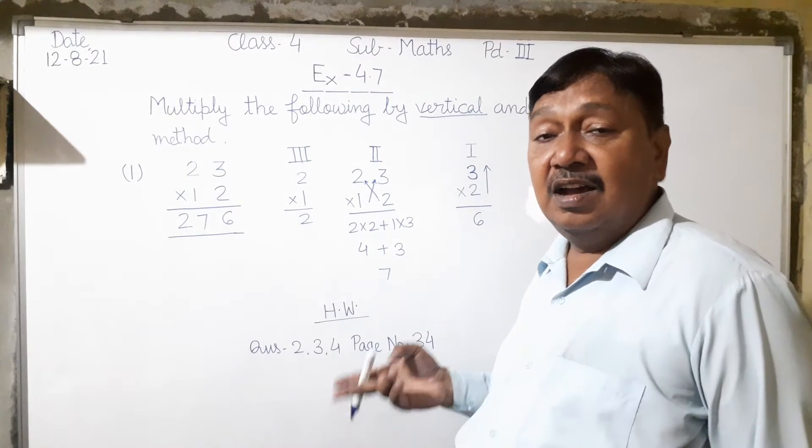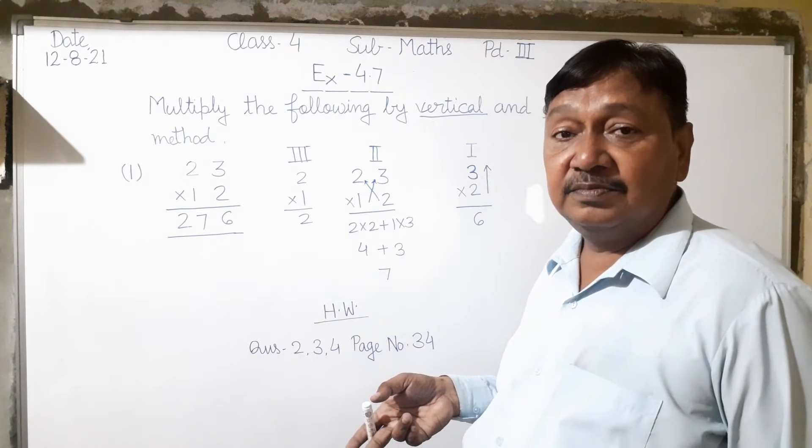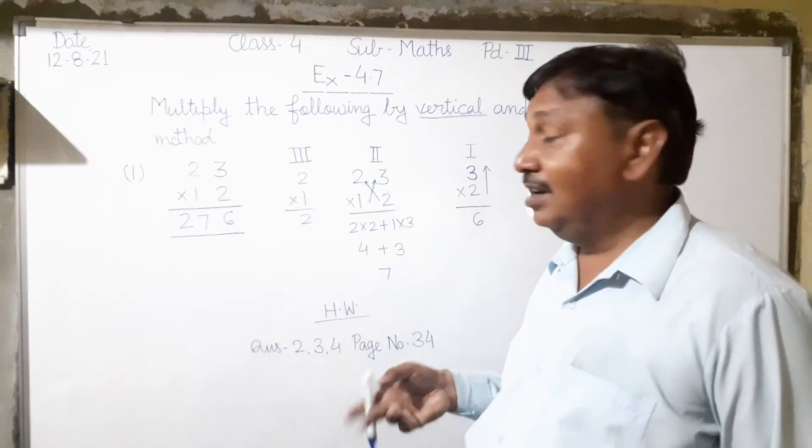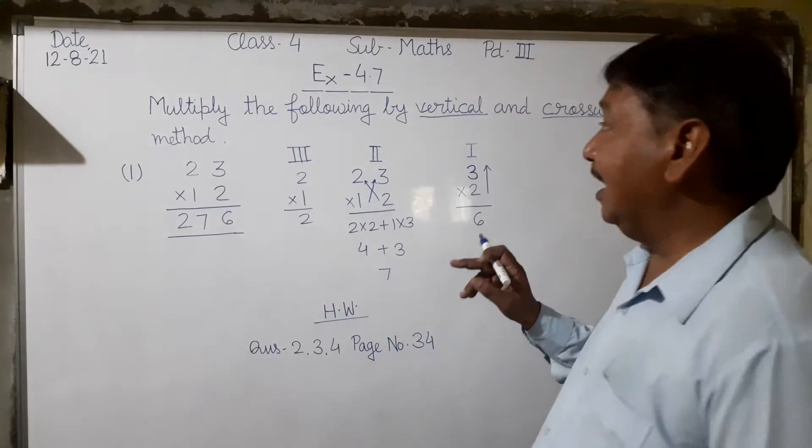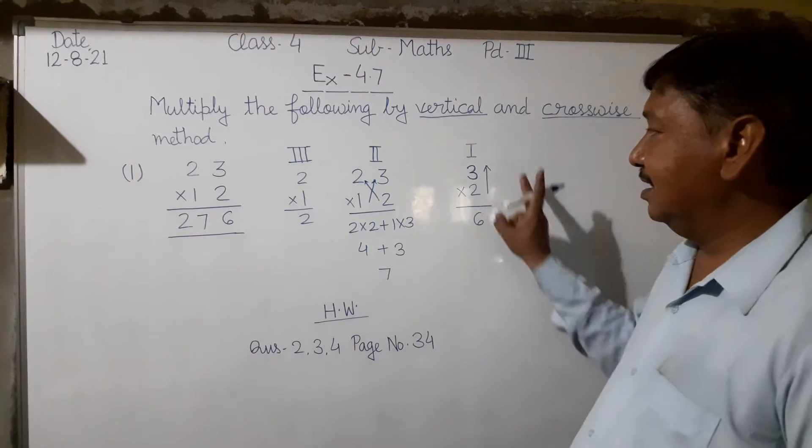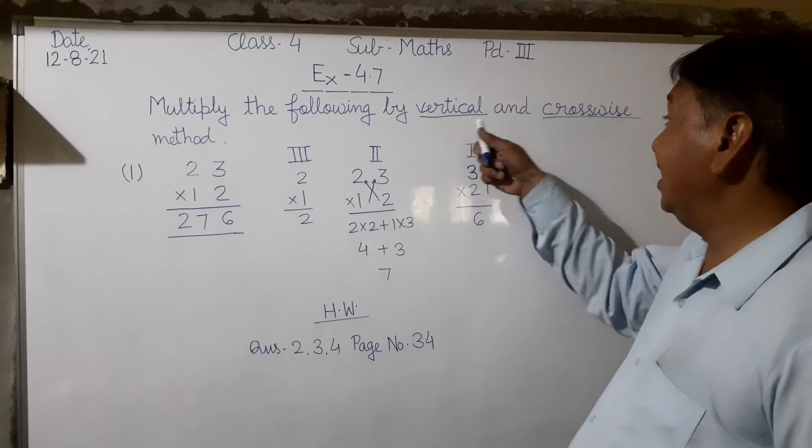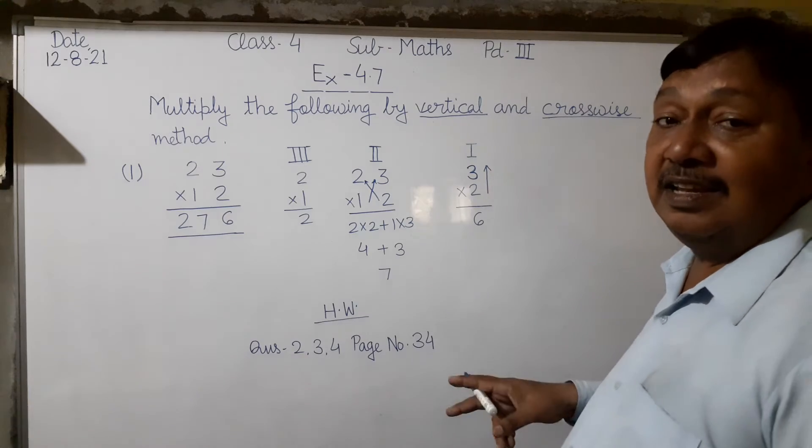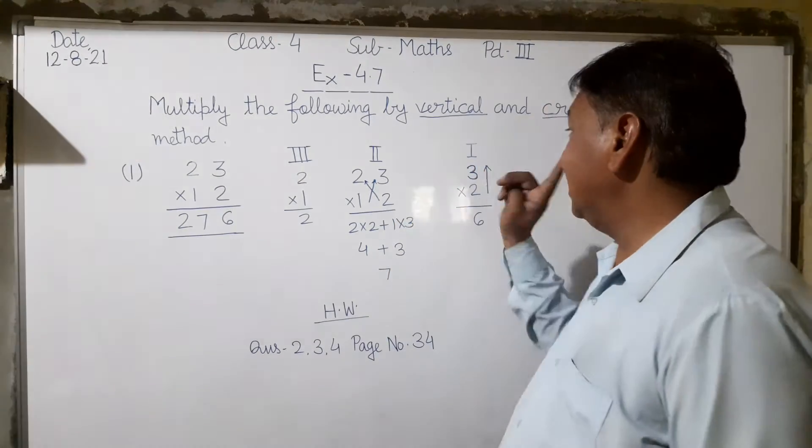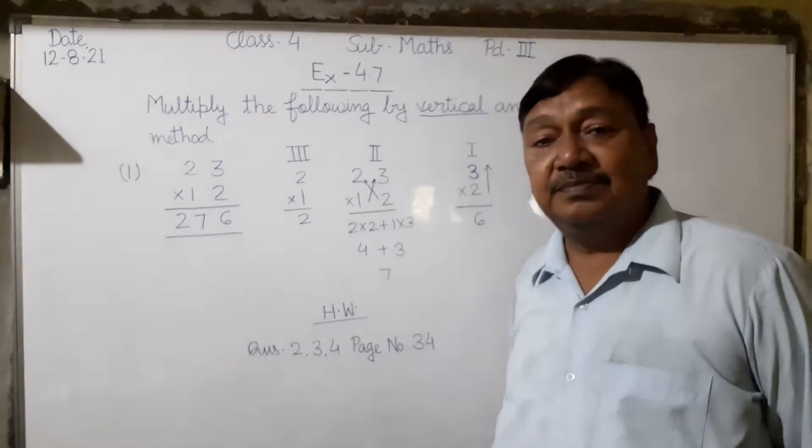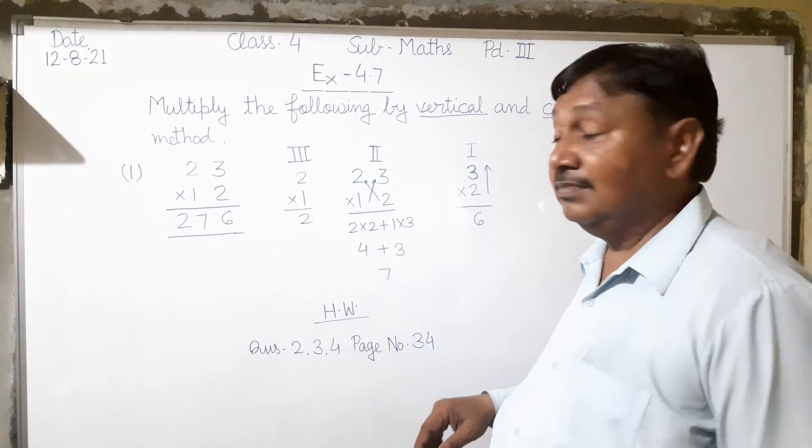This is the vertical and crosswise method. It's a simple method applied in three steps: first step, second step, third step. It will be clear then, okay.